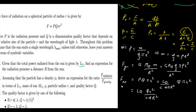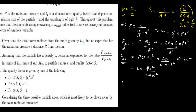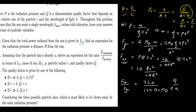Now computing the ratio F_radiation / F_gravity by substituting both expressions and simplifying, the result is: F_radiation / F_gravity = 3·L_solar·Q / (16π·G·C·M_solar·ρ·r). This is the answer to part 2.